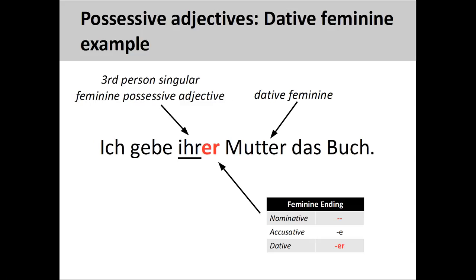We can change the root of the possessive adjective to change this relationship: 'Ich gebe ihrer Mutter das Buch' — I give the book to her mother. Although the root of the adjective changes and no longer has 'ein' in it, the adjective ending still remains the same. The following feminine noun is still singular and in the dative case. Note that there is some ambiguity, as the possessive adjective 'ihr' can also be third person plural, which would mean 'I give the book to their mother'. In situations where the possessive adjectives are the same, you simply need to understand the meaning from context.